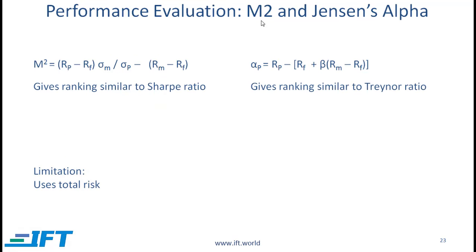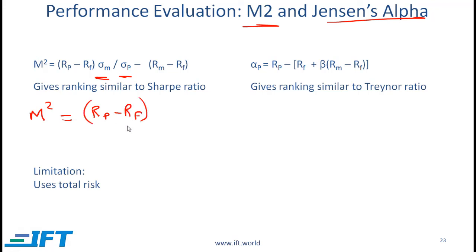Moving now to two more performance evaluation measures: M-squared and Jensen's Alpha. M-squared gives similar rankings to the Sharpe ratio because both use total risk. To help remember M-squared: first write out the Sharpe ratio — return on portfolio minus the risk-free rate divided by the risk of the portfolio — then multiply by the risk of the market, and then subtract the market risk premium, which is R_M minus R_F.